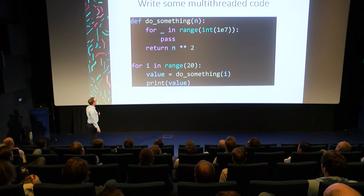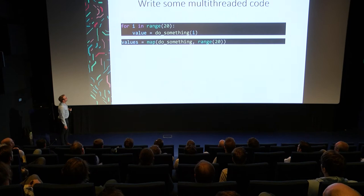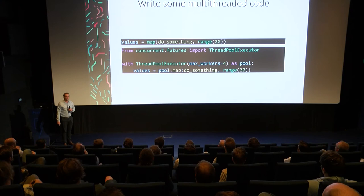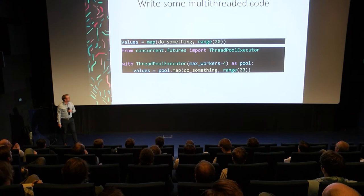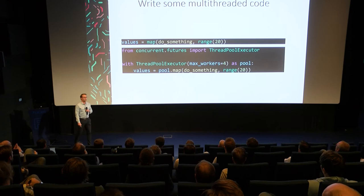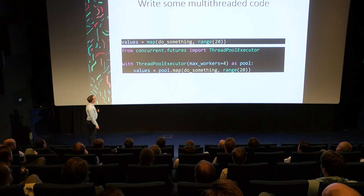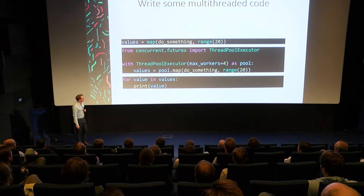The first step toward parallelizing this is to rewrite the for loop more functionally using the map function — a built-in Python function that takes a function and an iterable and calls that function on every element. Next, we import a ThreadPoolExecutor from the concurrent.futures module in the Python standard library. Instead of calling map directly, we call map as a member function of that pool. When creating the thread pool, we give it the max number of workers — the maximum number of threads it's allowed to use.